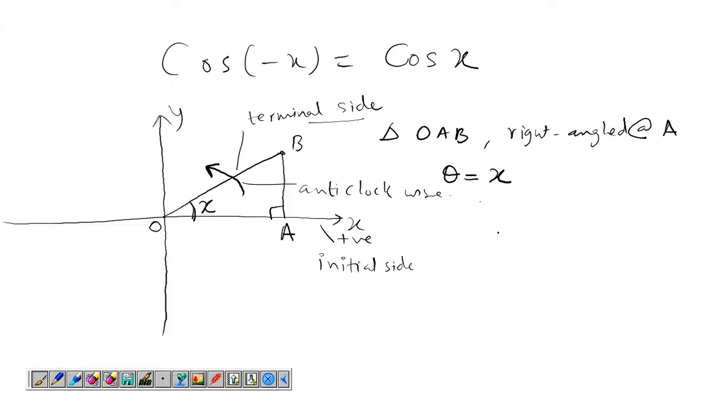Now our cos(x) would be, this is the base and this is the hypotenuse. So base upon hypotenuse is OA upon OB.